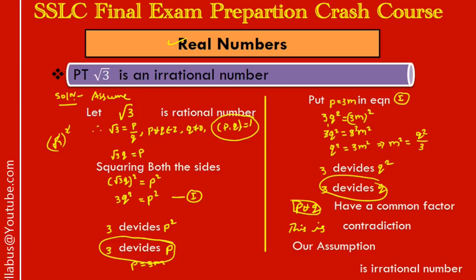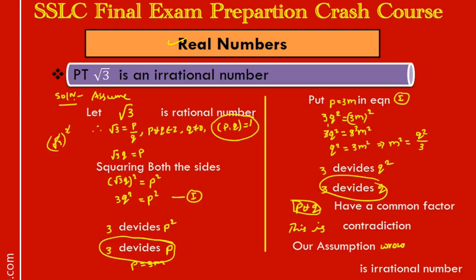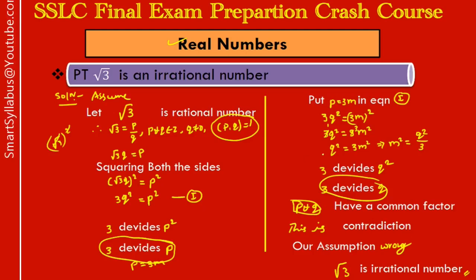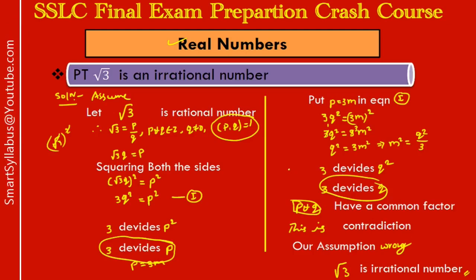This contradiction arises because we assumed root 3 is a rational number. Since our assumption leads to a contradiction, our assumption is wrong. Therefore, root 3 is not rational — root 3 is an irrational number. Just practice these steps again and again; once you know them, you will get two marks 100% in your final examination.